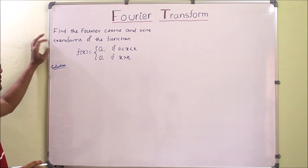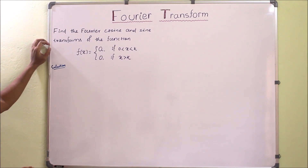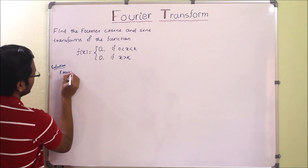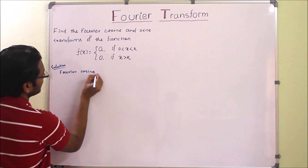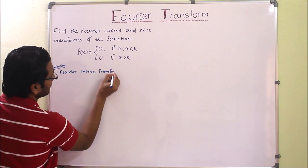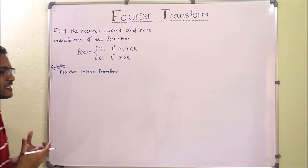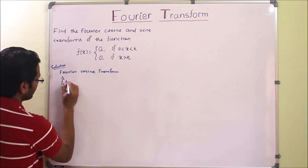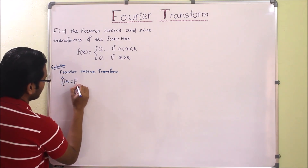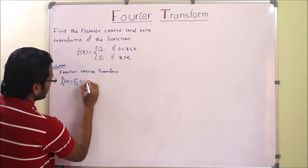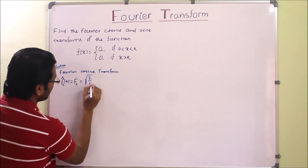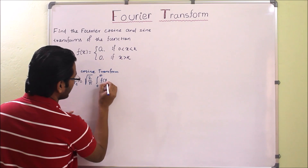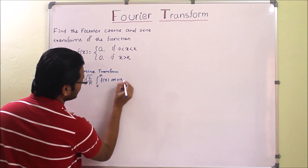Before solving this problem we need the formulas. The first formula is the Fourier cosine transform. The Fourier cosine transform of f(x) is defined as F_c(w), which equals the square root of 2 over pi, times the integral from 0 to infinity of f(x) cos(wx) dx.